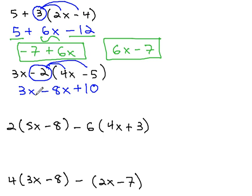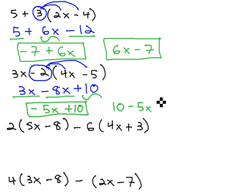This time, the like terms we want to combine are the 3x and the negative 8x, to give us negative 5x, and then finally the plus 10. Again, this one could also be written as 10 minus 5x, as the order of the terms does not make a difference.